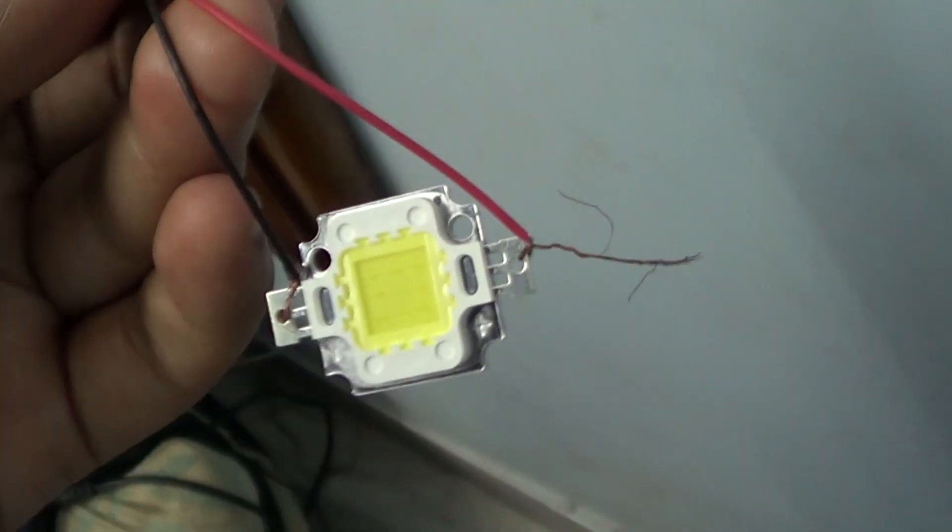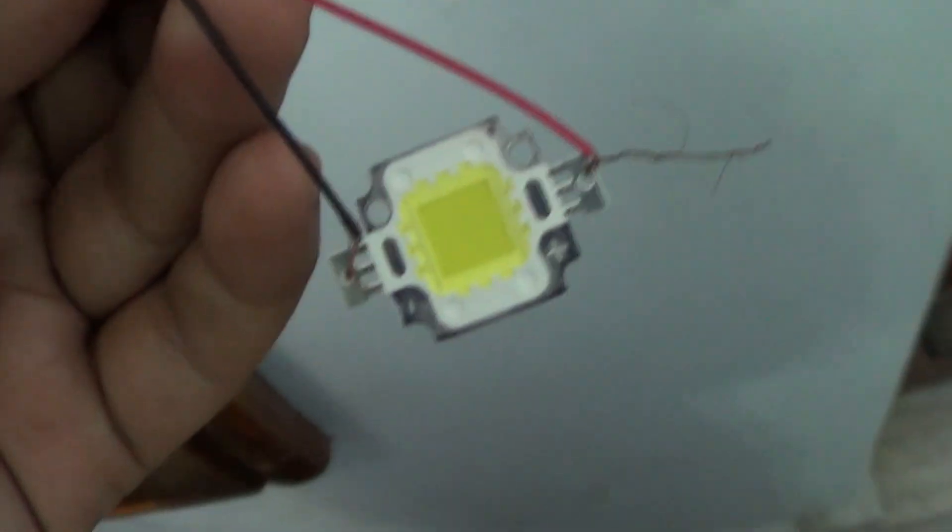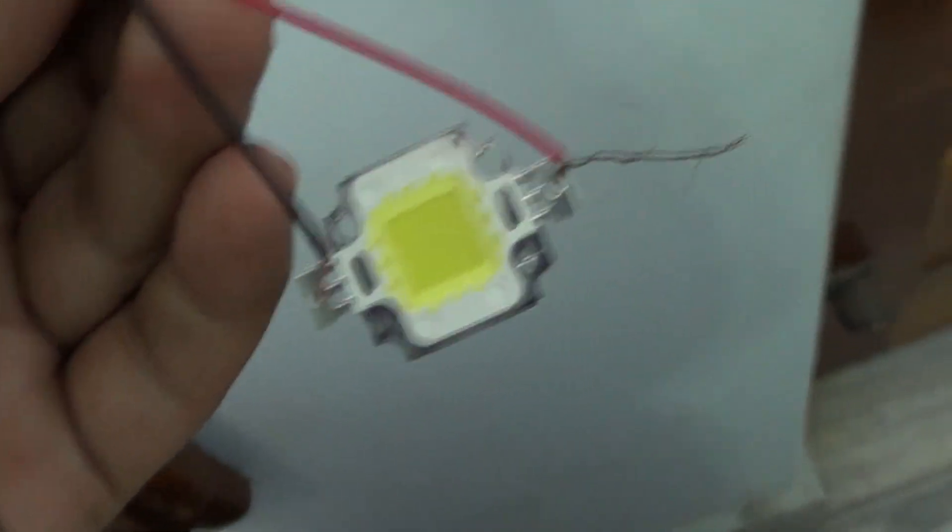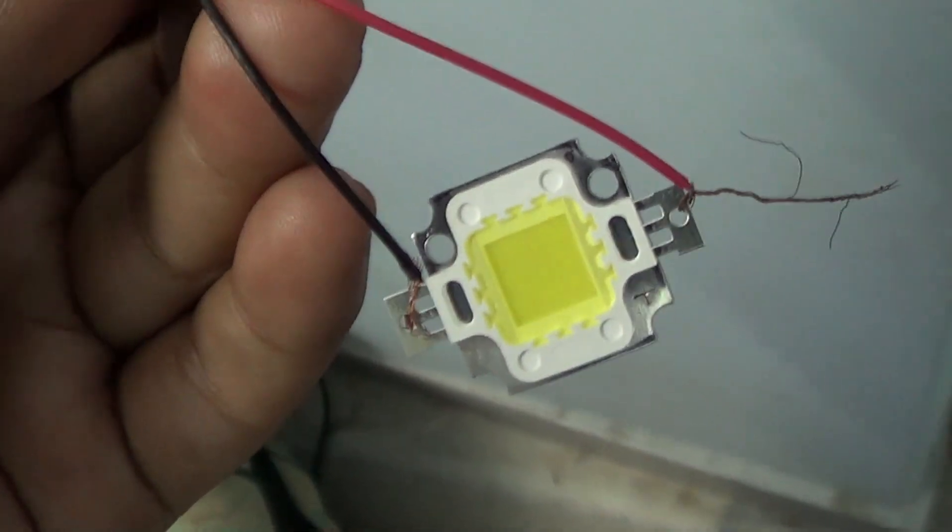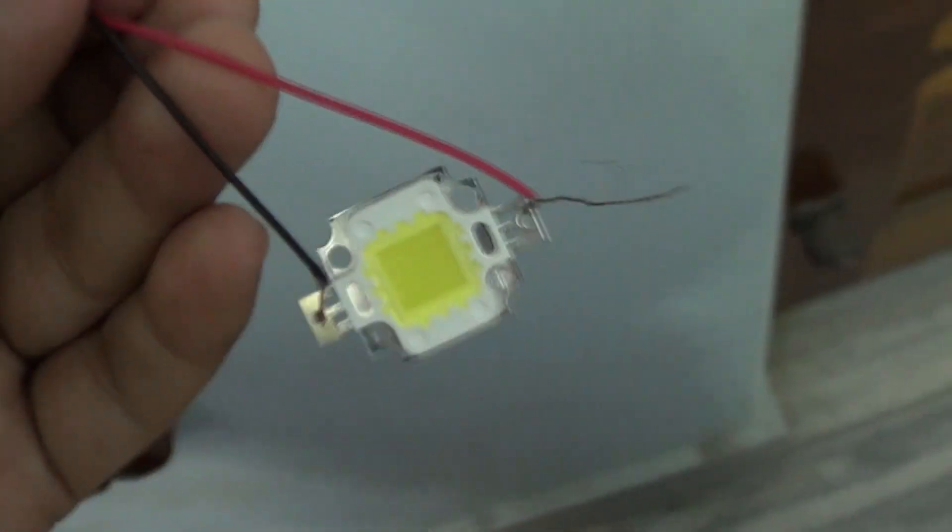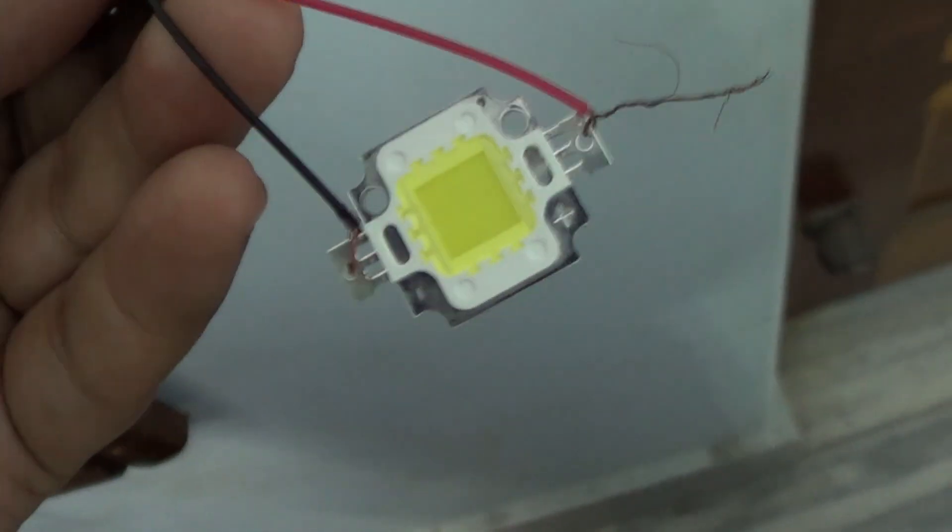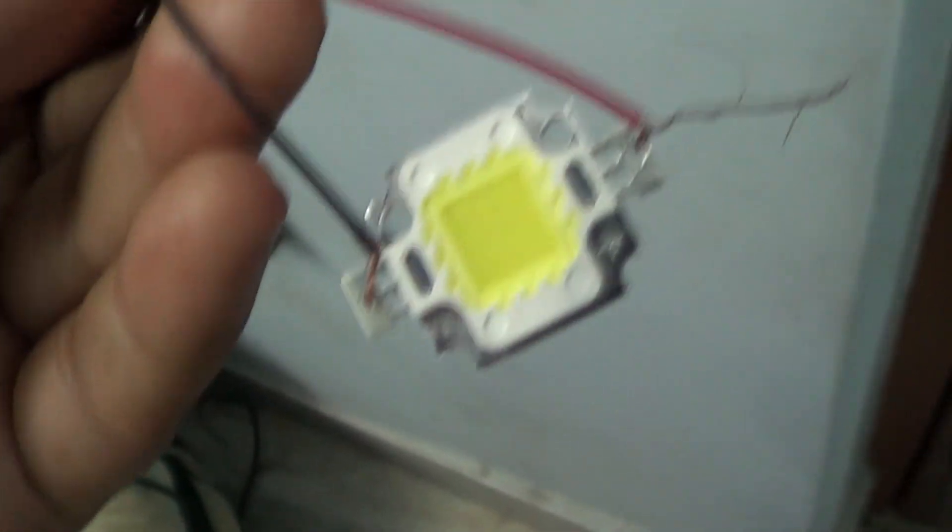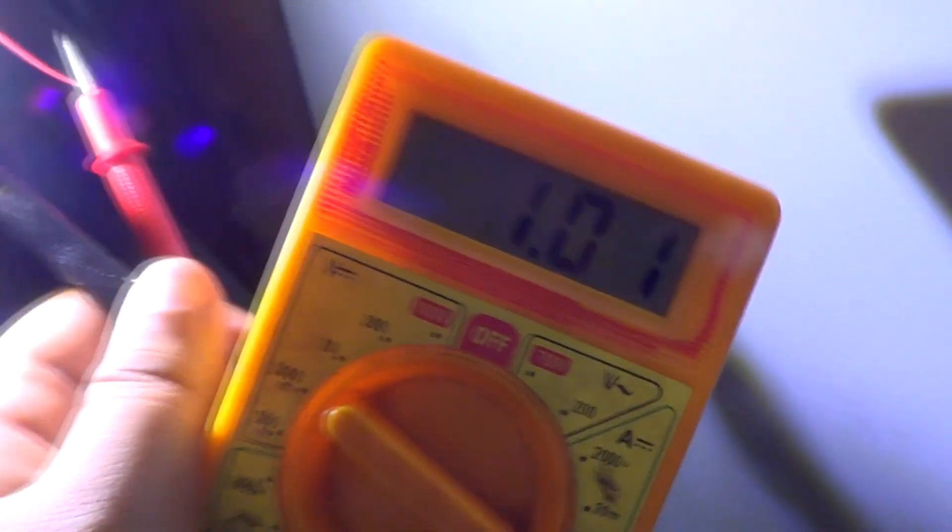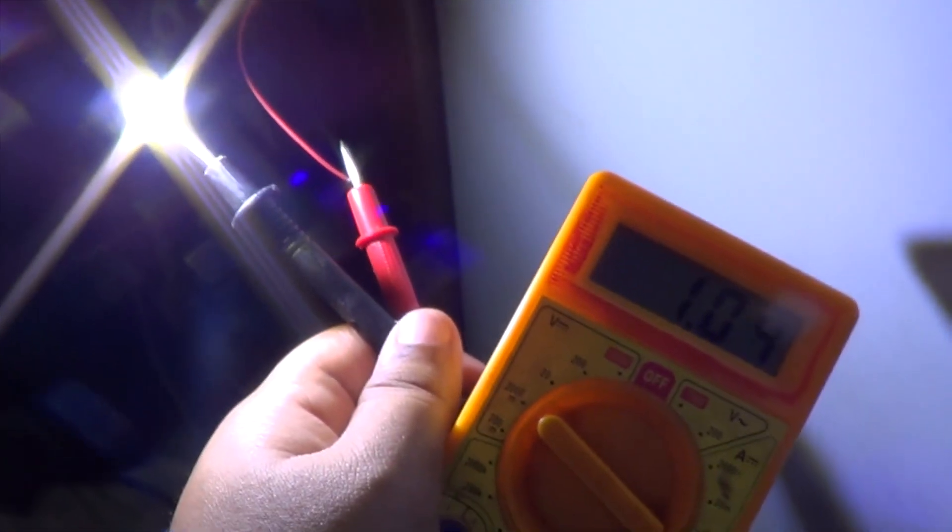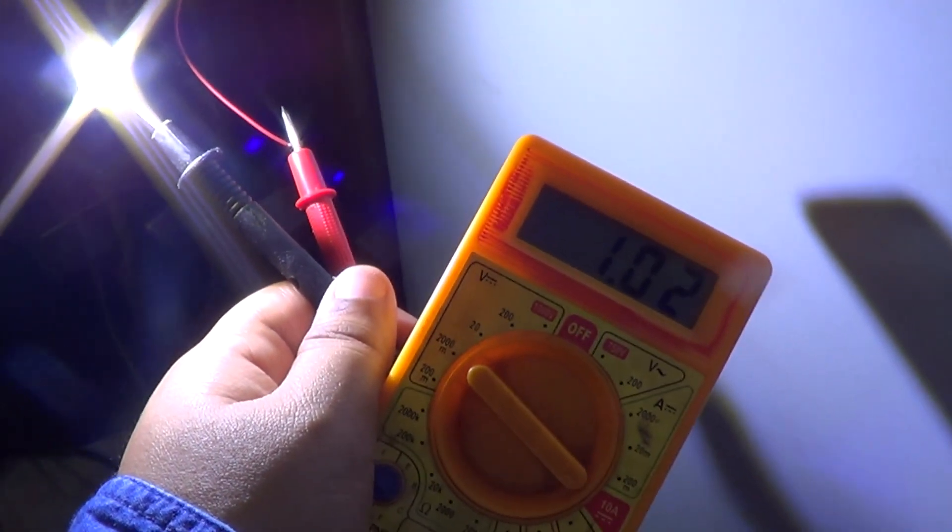I'll remove it later because it might have reached around seventy degrees in just a few seconds. So you must attach it to a heat sink. Let's see how much current it draws. Because it is drawing around one amp of current. And so, it's twelve volts and ten watts.